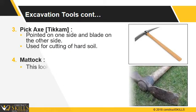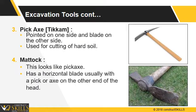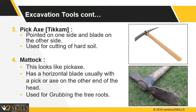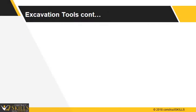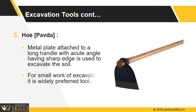Mattock looks like a pickaxe. A mattock has a horizontal blade usually with a pick or axe on the other end of the head. It is used for grubbing tree roots. Hoe has a metal plate attached to a long handle with an acute angle having a sharp edge, used to excavate the soil. It is a widely preferred tool for small work of excavation.